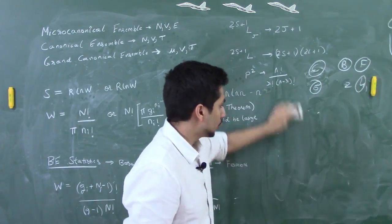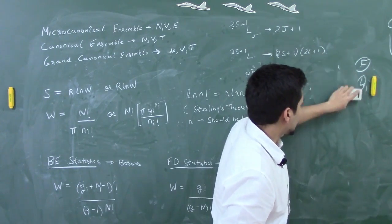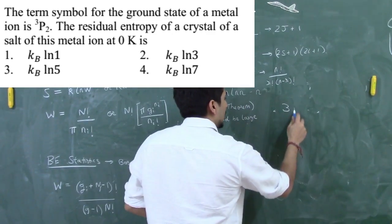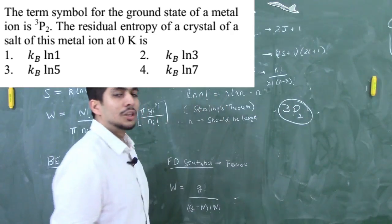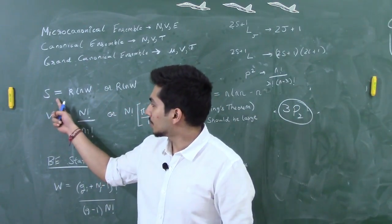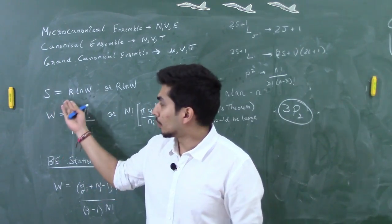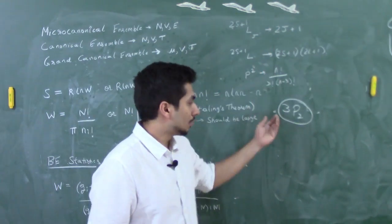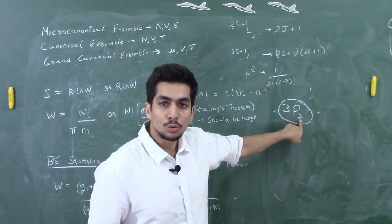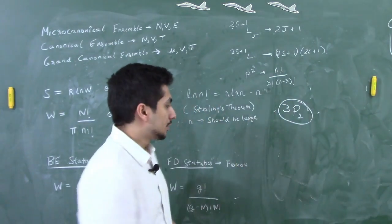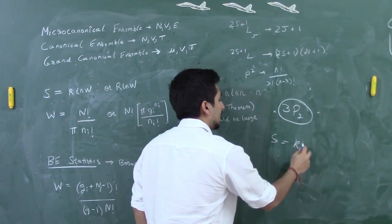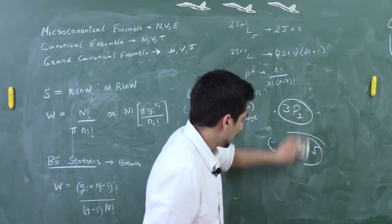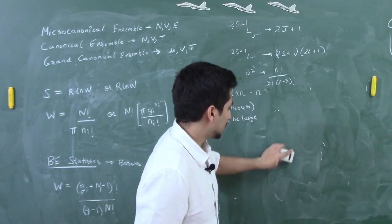Another question from the December 2017 exam worth four marks: the term symbol 3P₂ is given; find the residual entropy. The number of microstates = 2J+1 = 2(2)+1 = 5. Therefore, residual entropy S = k·ln(5). That solves the four-mark question.